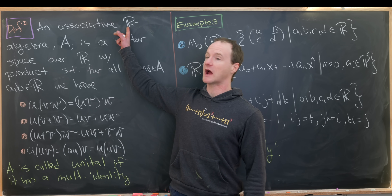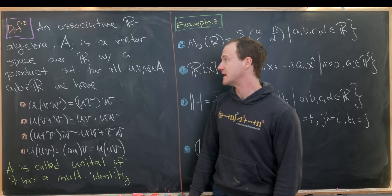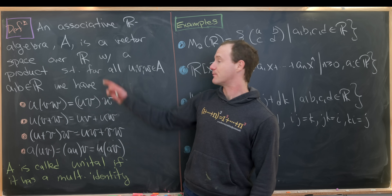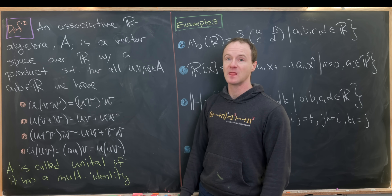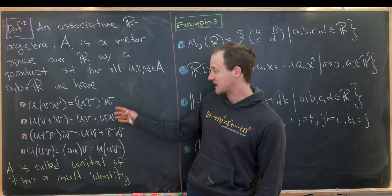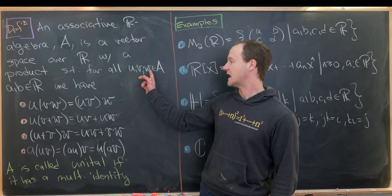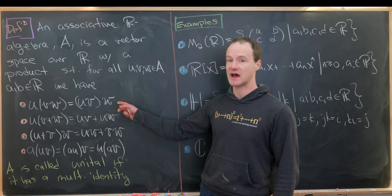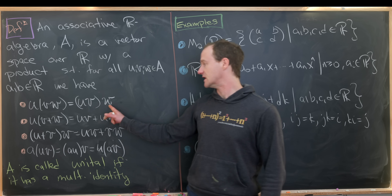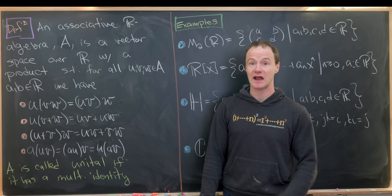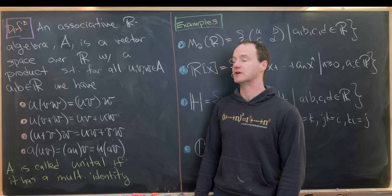An associative R-algebra, where R is the real numbers — A is a vector space over R with a product, so that's a way of multiplying two vectors and getting a new vector. And that product must satisfy four axioms. For all U, V, and W, we have an associativity axiom: U times (VW) is the same thing as (UV) times W. We do not have a commutativity axiom. This is an associative algebra, not an associative commutative algebra.